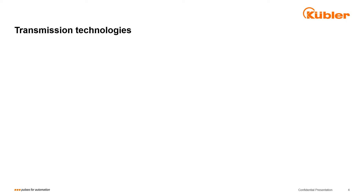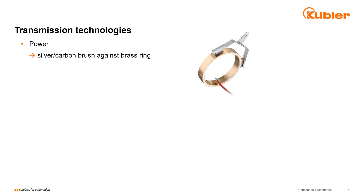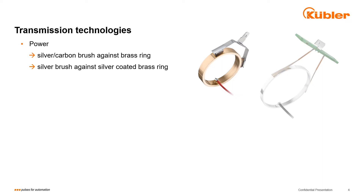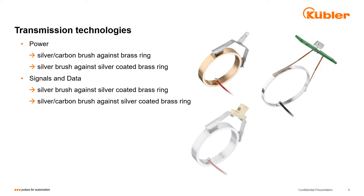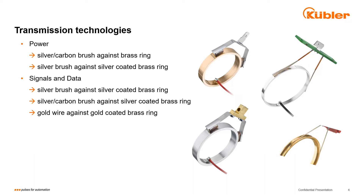Here is a first rough overview of our transmission technologies; details will follow later. For load we usually use silver graphite versus a brass ring, or silver brushes against silver-plated rings. The silver brush against silver ring is also used for signals and data. On smaller slip rings we also use silver carbon against silver ring for signals and data. On top, gold wire technology still has its field of application for transmission in smaller slip rings.